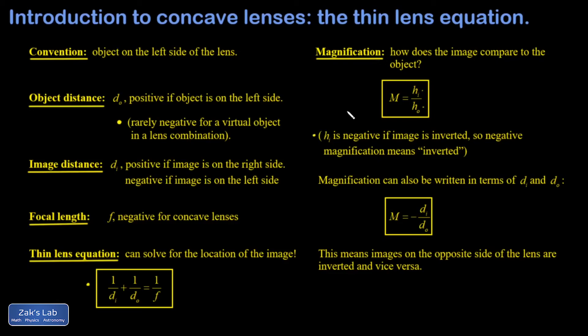If it's upright, the height is positive. And for a diverging lens, it's going to be positive. We can express magnification in terms of the image distance and object distance as the negative of d_i over d_o. And because for diverging lenses, our image distance is negative, that means the magnification is positive, just like we saw in the ray diagram.